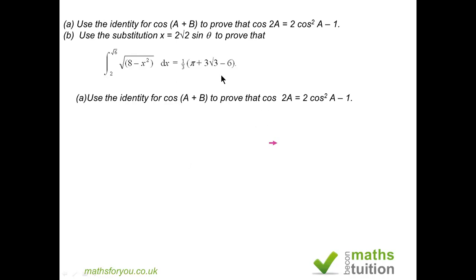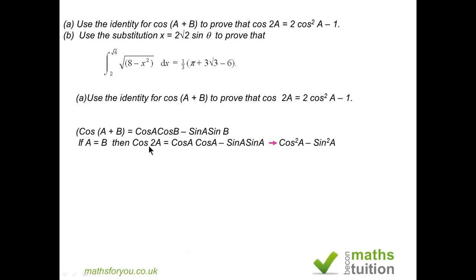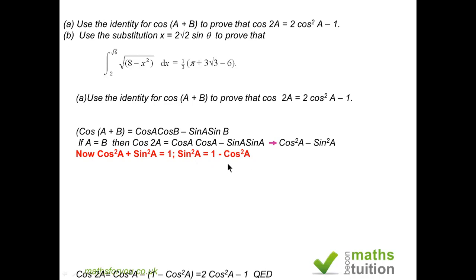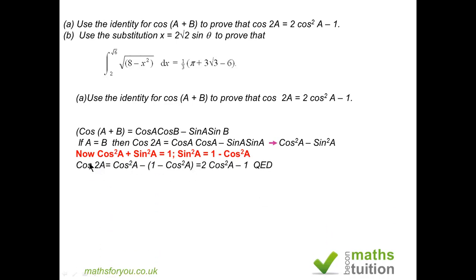For the first part, we use cos(a+b) = cosA cosB − sinA sinB. If a equals b, then cos 2a = cosA cosA − sinA sinA, which becomes cos²a − sin²a. We know that cos²a + sin²a = 1, so sin²a = 1 − cos²a. Replacing sin²a with 1 − cos²a gives us cos 2a = 2cos²a − 1.